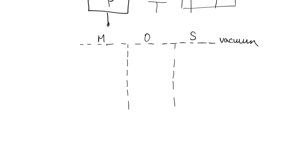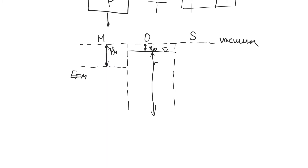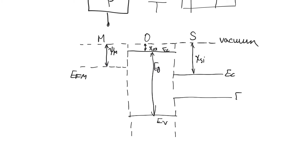From this flat vacuum level, we identify the metal region, the oxide region, and the semiconductor region. Using the work function of the metal, we can find the location of its Fermi level. Using the electron affinity of the oxide (chi oxide), we can find its conduction band edge, and using its band gap we can find its valence band edge. Similarly, for silicon, using its electron affinity we find the conduction band edge, and using the band gap energy we find the valence band edge. Knowing the doping level of the P-type silicon, we can also find the location of its Fermi level, which sits below the middle of the band gap. We see there are two Fermi levels — one for the metal and one for the semiconductor — as expected since this is not an equilibrium band diagram.